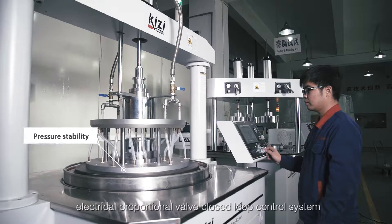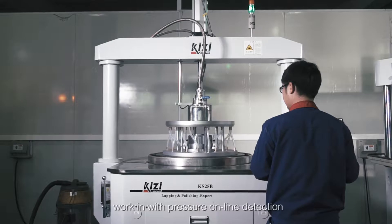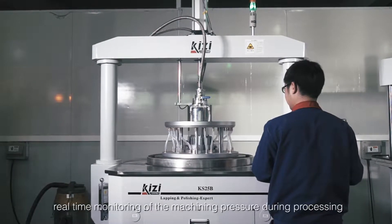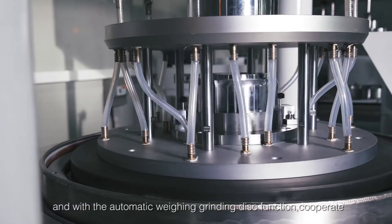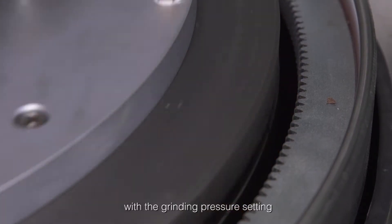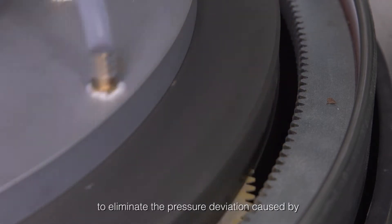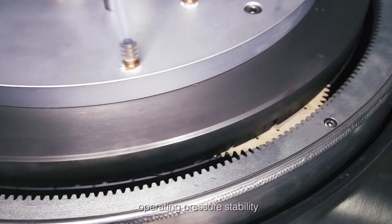Electrical proportional valve closed-loop control system works with pressure online detection, real-time monitoring of machine pressure during processing, and automatic weighing grinding disk function. This cooperates with grinding pressure settings to eliminate pressure deviation caused by abrasive disc wear and ensure long-term operating pressure stability.